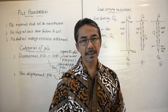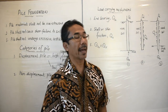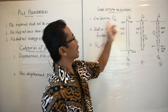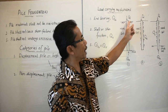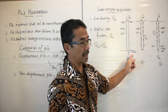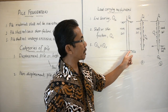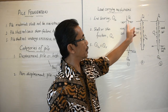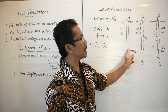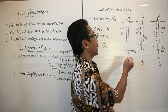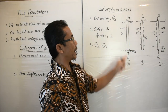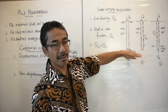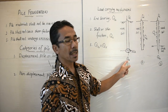Now let's take a look at how piles carry load — the load carrying mechanisms. In case 1, if we have weak soil underlain by rock, when we install a pile that rests on the rock and apply compressive load Q, the entire Q is carried by the pile tip. This is what we call end bearing, noted as Q sub B. So the pile resting on rock is an end bearing pile.